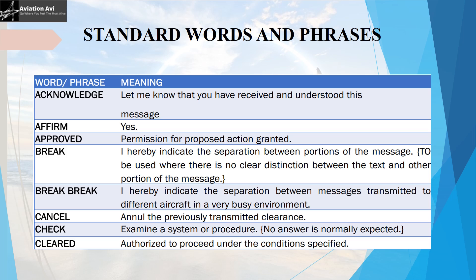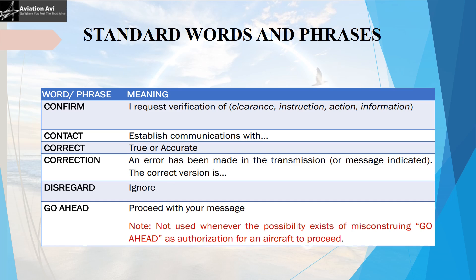The next commonly used phrase is 'confirm', which means 'I request verification of a clearance, instruction, action, or information.' For example, if a follow-me vehicle is holding at the holding point of a runway and the ATC wants to confirm whether it is clear of the runway, the ATC will transmit 'Follow-me Tango Alfa Romeo, confirm clear of the runway.' If the follow-me is clear, it must respond 'Tango Alfa Romeo, follow-me, clear of runway' or the shorter version 'affirm'.